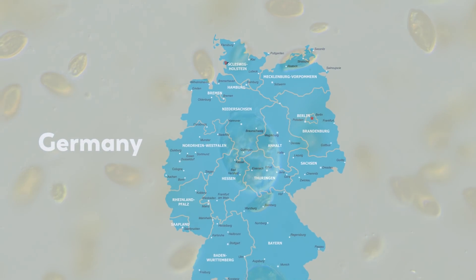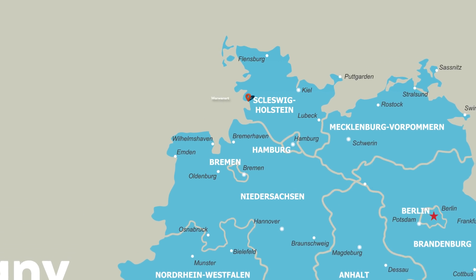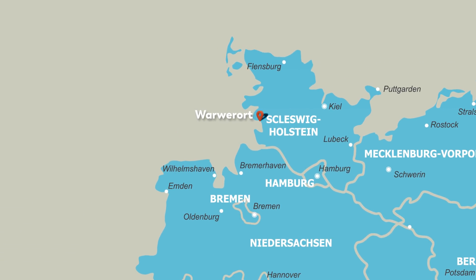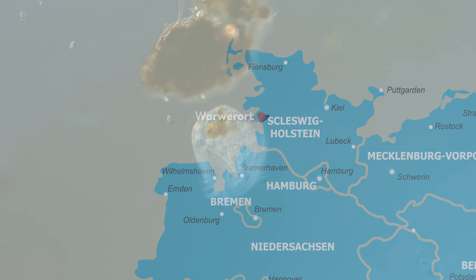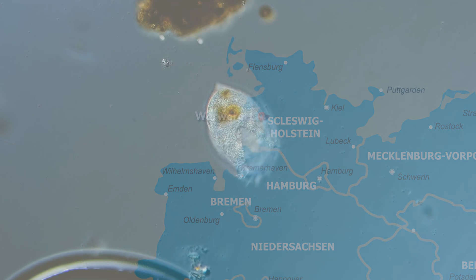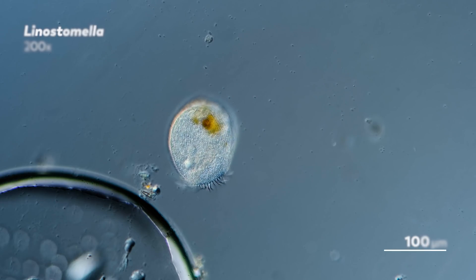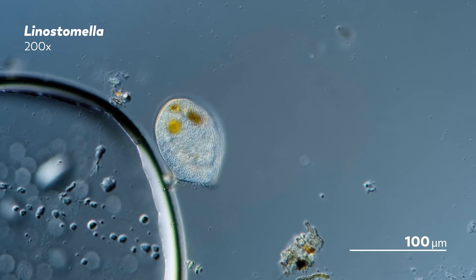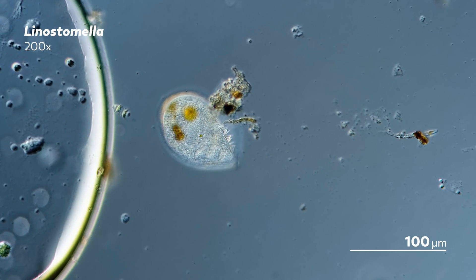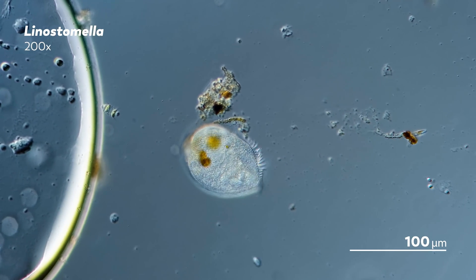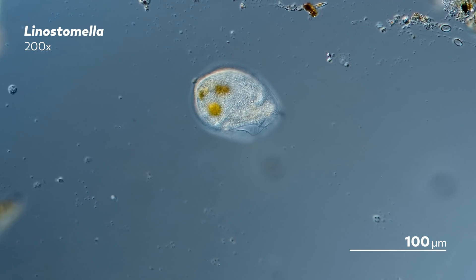We know that he was born in 1877 in a town north of Hamburg, Germany. And we also know that he was a high school teacher who taught English, French, and natural history. But any other details of his personal life are obscure — except that he had a daughter, Lucia, who attended a series of lectures about protozoans at the Tropical Institute of Hamburg.